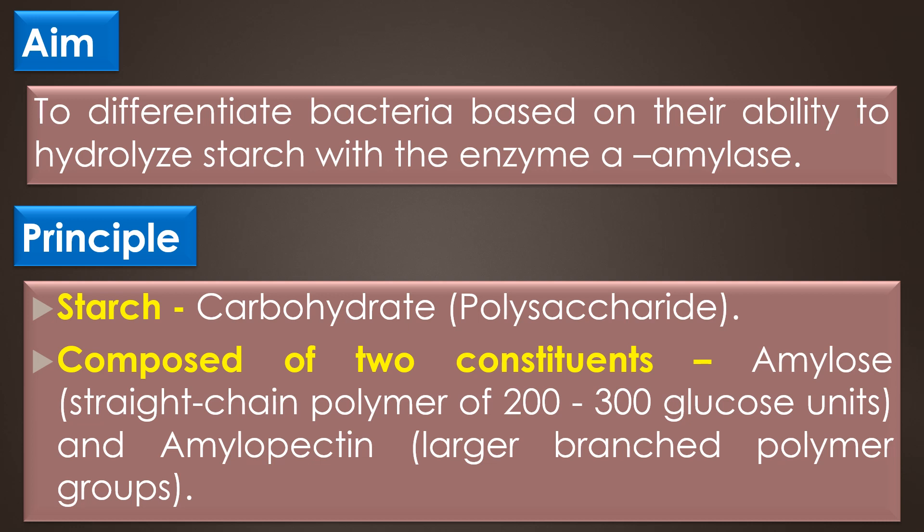With the enzyme alpha amylase. Starch is a complex carbohydrate and it is a polysaccharide composed of two constituents: one is amylose and another one is amylopectin. Amylose is a straight chain polymer of 200 to 300 glucose units, and amylopectin is a larger branched polymer group. The alpha-D glucose molecules in both amylose and amylopectin are bonded by 1,4 alpha glycosidic linkage.